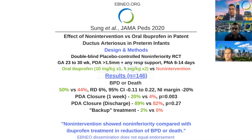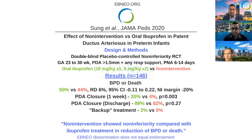This was a randomized non-inferiority trial where preterm infants less than 30 weeks of gestation with a PDA of more than 1.5 millimeters, on breathing support between 6 and 14 days of age, were randomized to non-intervention or treatment with oral ibuprofen at standard doses — 10 milligrams per kilogram, followed by two doses of 5 milligrams per kilogram every 24 hours.